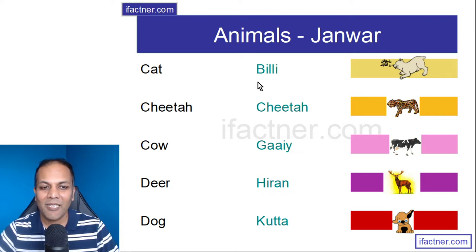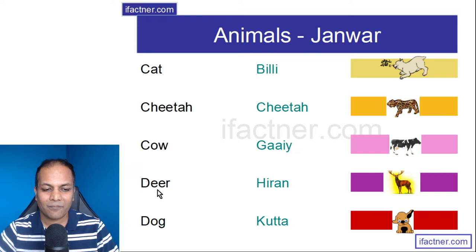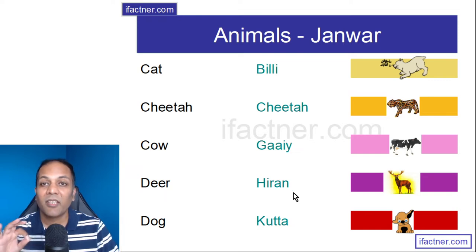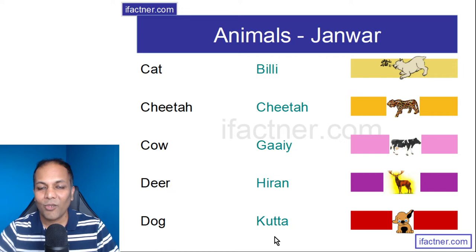Cheetah is Cheetah. Cow is Gai. Deer is Hiran. Dog is Kutta.